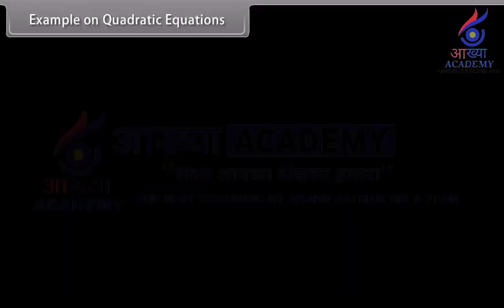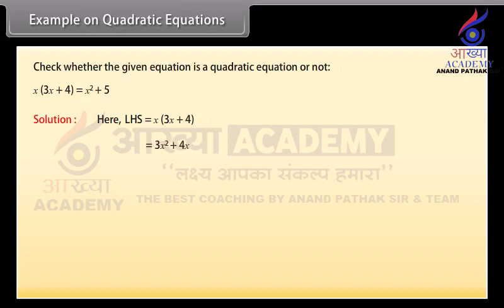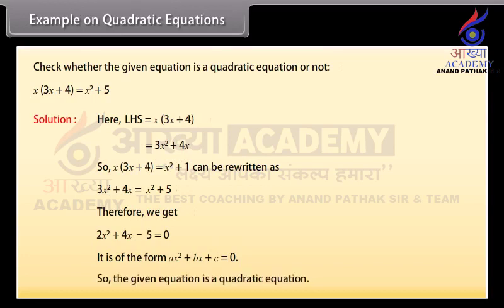Example on quadratic equations. We will now check whether the given equation is a quadratic equation or not. Here, LHS is equal to x into (3x plus 4) which equals 3x squared plus 4x. So x into (3x plus 4) equals x squared plus 1 can be written as 3x squared plus 4x equals x squared plus 5. Therefore we get 2x squared plus 4x minus 5 is equal to zero. It is of the form ax squared plus bx plus c equals zero, so the given equation is a quadratic equation.